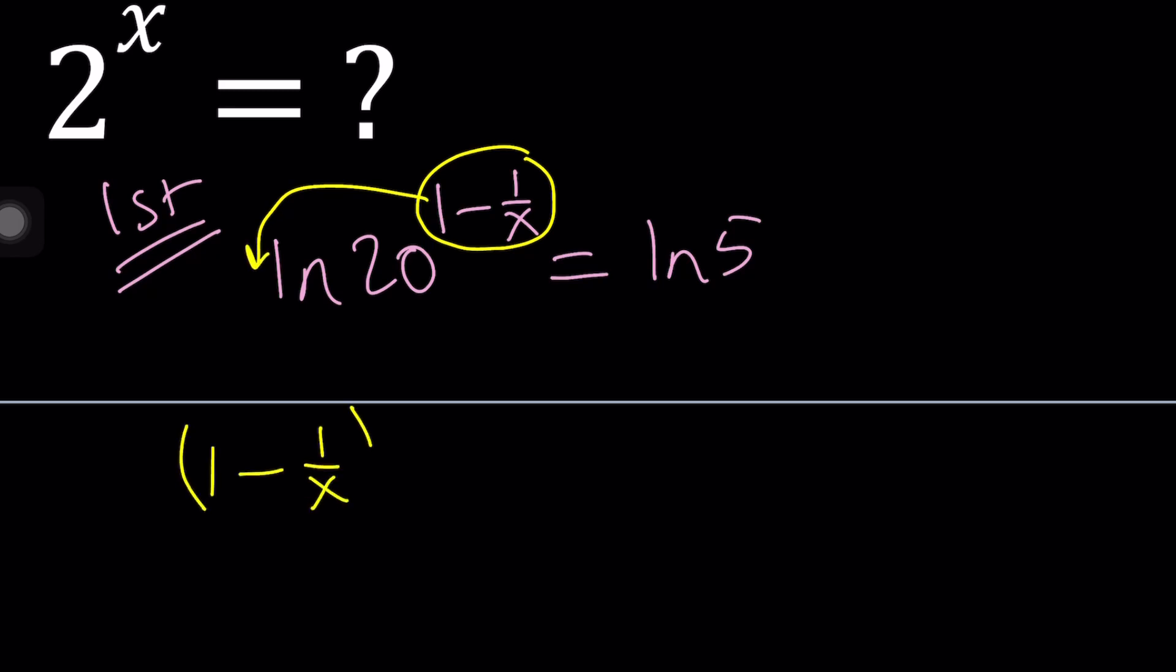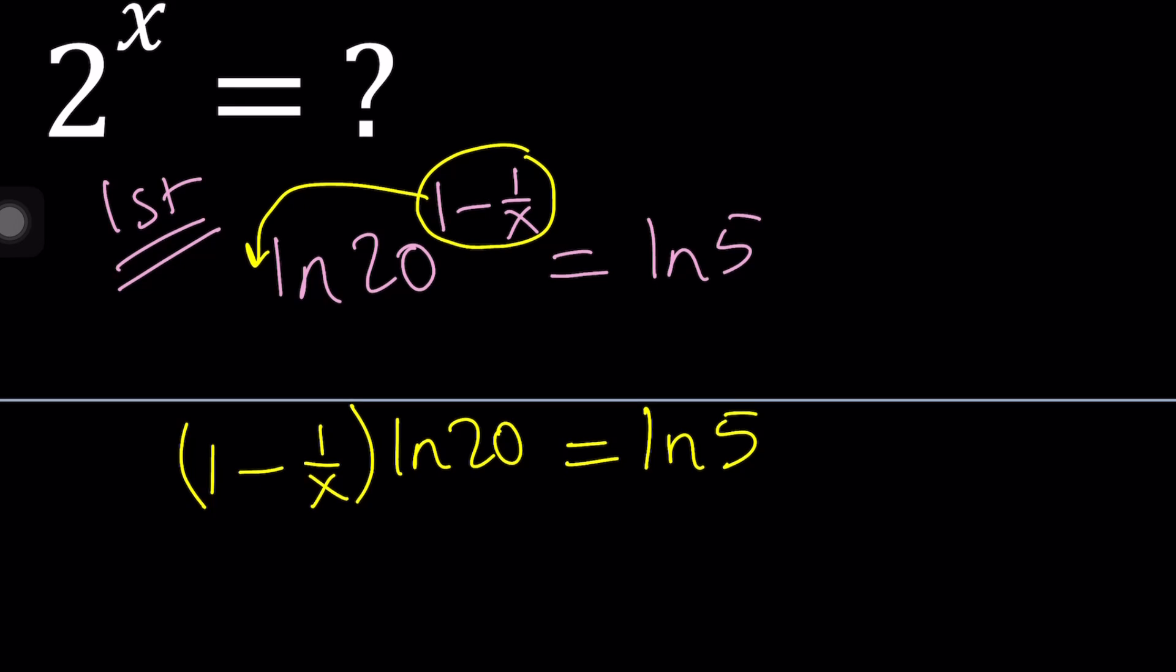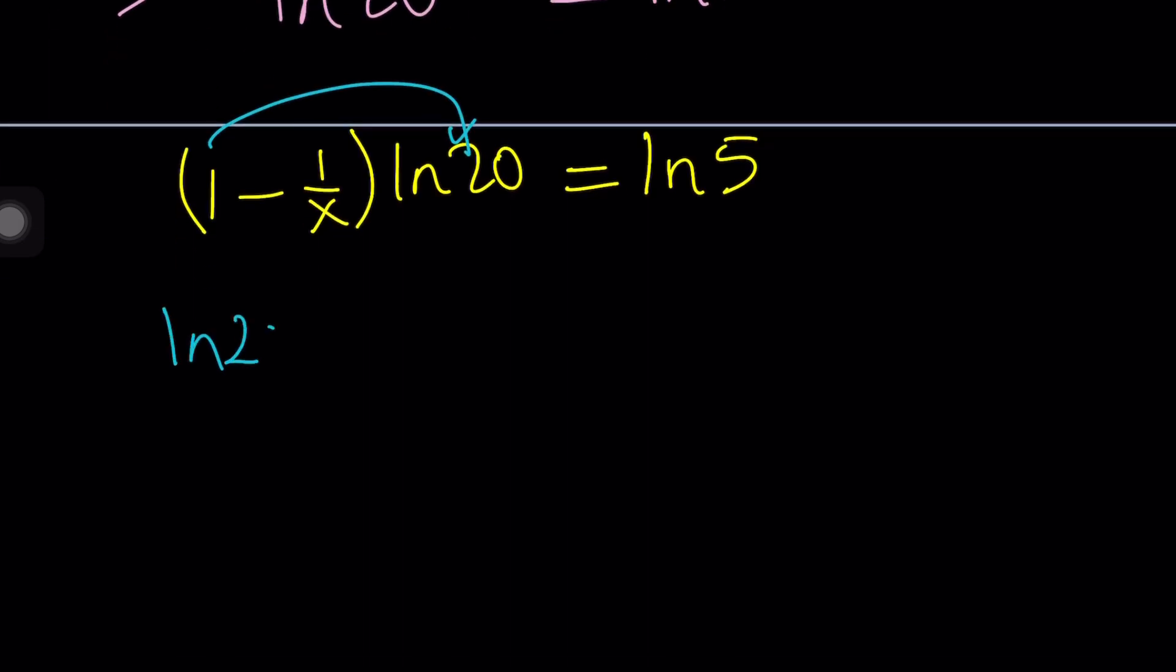1 minus 1 over x is desirable actually. Times ln 20, equals ln 5. And one thing that I notice is that from here you can isolate x, sort of. Don't make a common denominator because that's not good practice. In this case, you want to solve for x, so leave the x alone or leave the 1 over x alone. So here's what we're going to do instead. We're going to distribute because 1 is a constant. Multiply by ln 20 is going to be nice. And 1 over x multiplied by ln 20, we can write it as ln 20 divided by x.